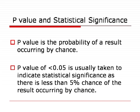Can you define the p-value and what is accepted as statistical significance? The p-value is the probability of a result occurring by chance. A p-value of less than 0.05 is usually taken to indicate statistical significance, as there is less than a 5% chance of the result occurring by chance.